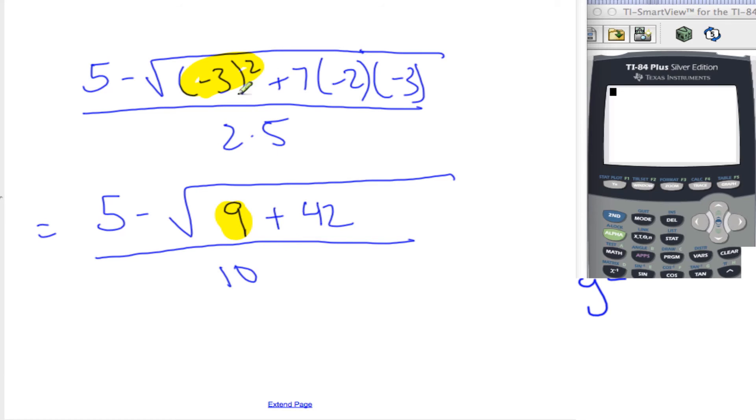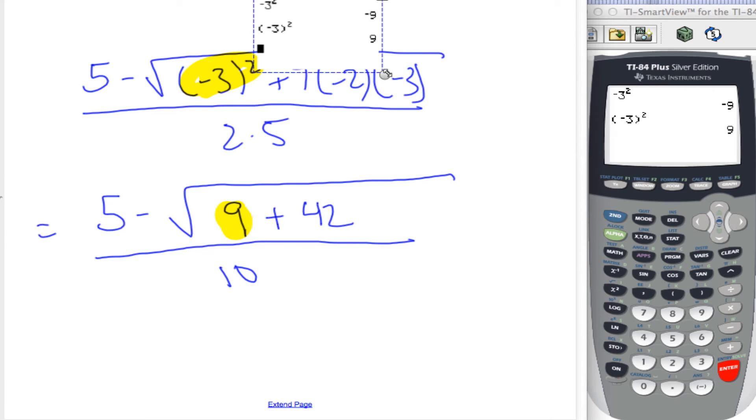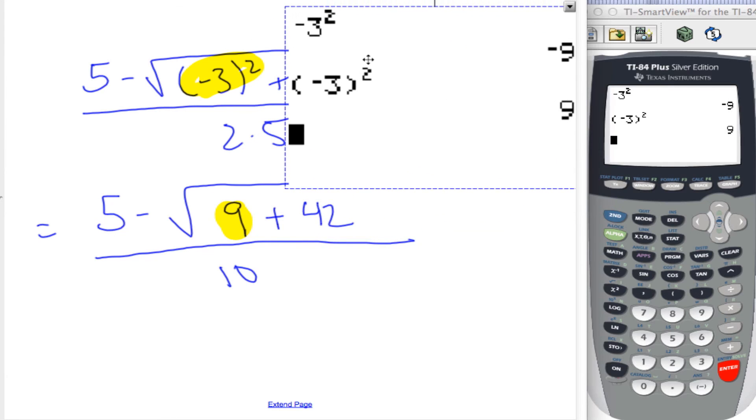That one there is you have to be really careful about because that negative is part of the squared. So if you are ever doing that on your calculator, if I just say negative 3 squared, that gives me negative 9. That's... This calculation is not what I'm supposed to do. I'm supposed to put the negative 3 in parentheses squared. This is the correct calculation. Okay. Very common mistake, that one. It is a very common mistake. So if I pull this here...